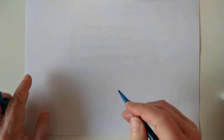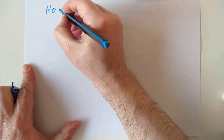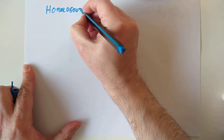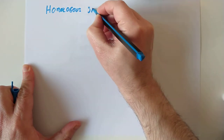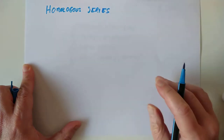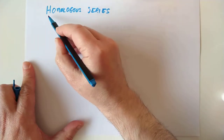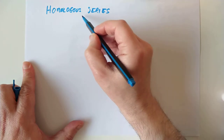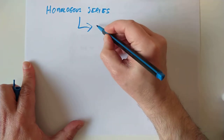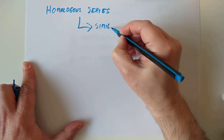The first thing I'd like to run through is the definition of a homologous series. You're supposed to know what a homologous series is and what characteristics the members of this series would have. 'Homo' means the same and 'logos' means shape — so basically, all the molecules have similar structures to each other.